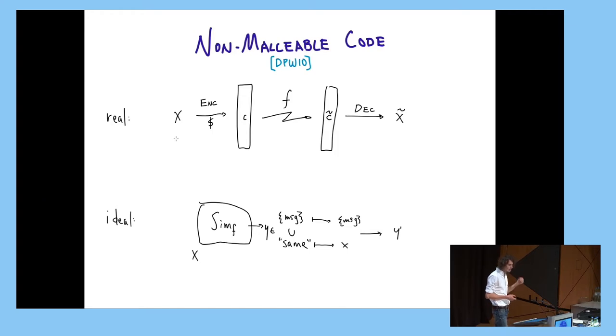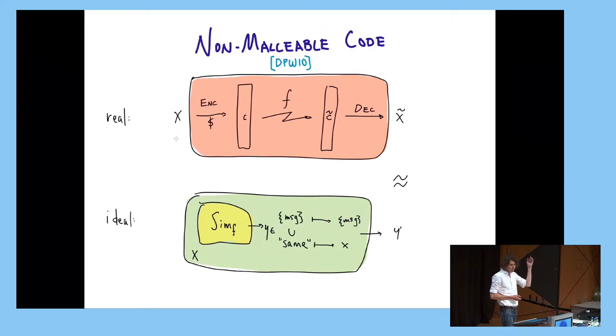And to argue security, what we want to say is that if we wrap this simulator, for any X, if we wrap this simulator such that the same symbol is mapped to X, then we want that the real experiment and this simulated experiment are indistinguishable. The simulator is independent of the message, but the guarantee should hold for all messages. And most of the time, this notion of indistinguishability is considered to be statistical, but computational notions have also been considered, and that's what we're going to focus on here.